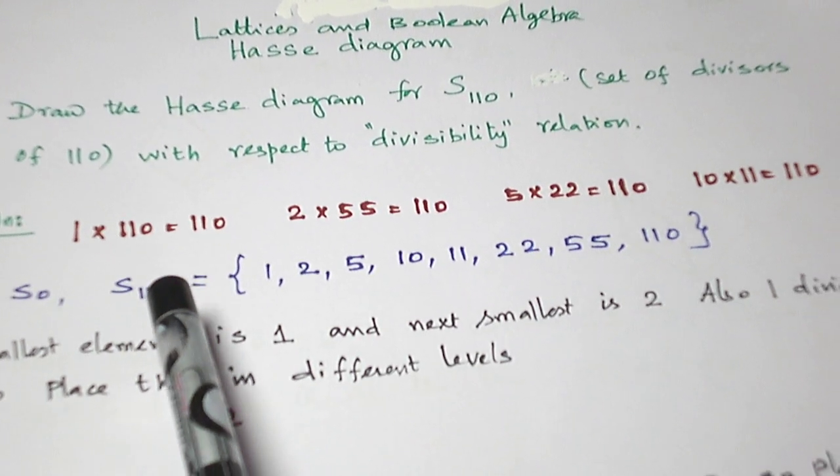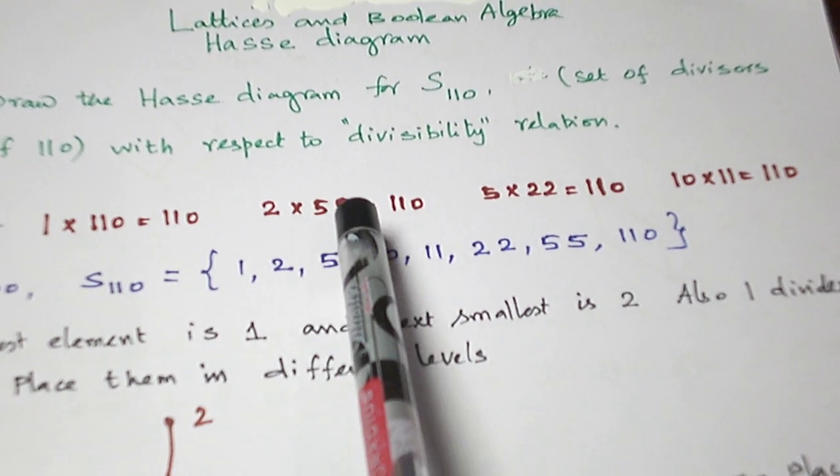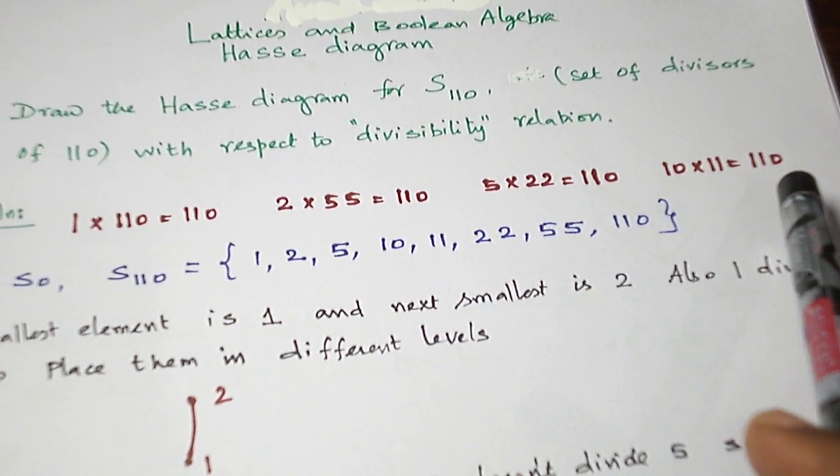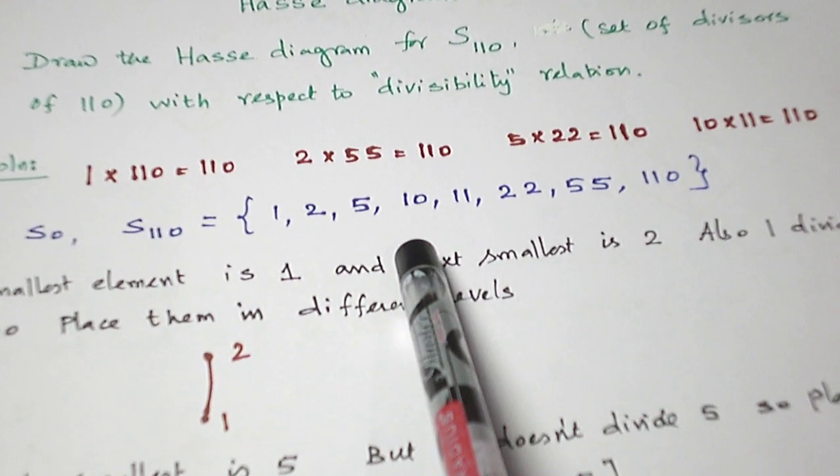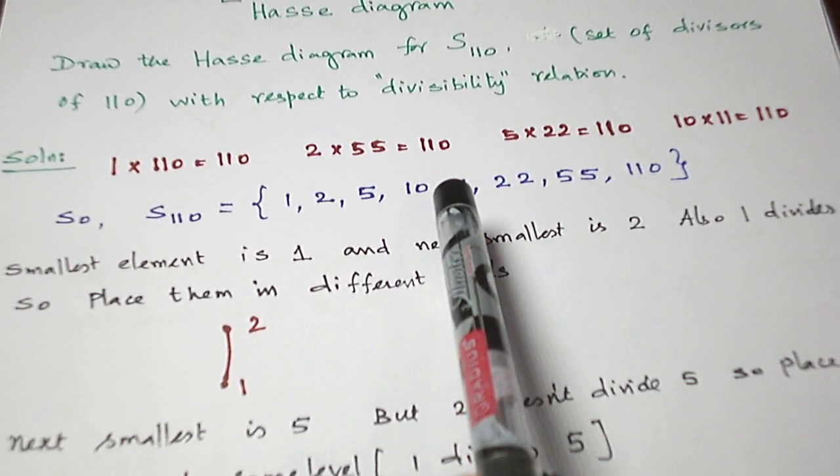So what are the divisors of 110? First of all let us write: 1 times 110 is 110, 2 times 55 is 110, 5 times 22 is 110, 10 times 11 is 110. So 1, 2, 5, 10, 11, 22, 55, 110 are the divisors.